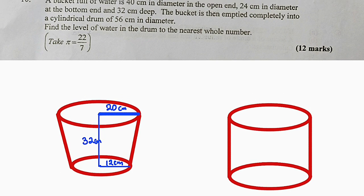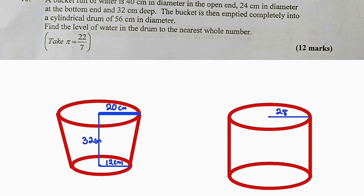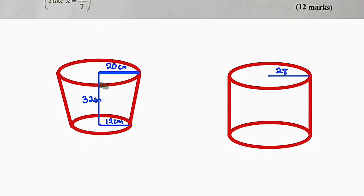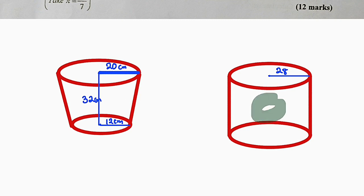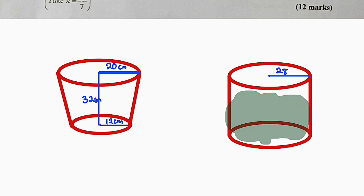For the cylindrical drum, the diameter is 56 cm, which implies the radius will be 28 cm. So from the center to the circumference of this cylinder is 28. The water in the bucket is completely filled, and it is emptied into this cylindrical container. We are asked to find the height of the water in this cylindrical container.